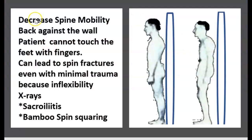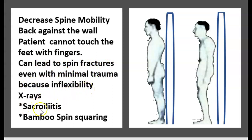Ankylosing spondylitis causes decreased spine mobility — patients cannot touch their feet with their fingers. It can also lead to spine fracture even with minimal trauma due to inflexibility. On X-ray, look for sacroiliitis and the classic bamboo spine appearance.